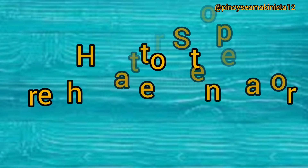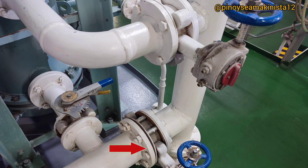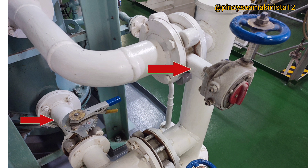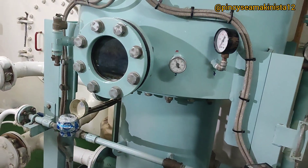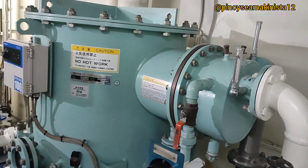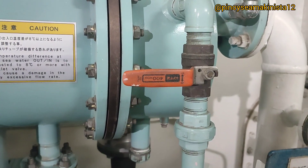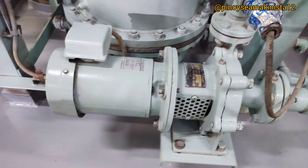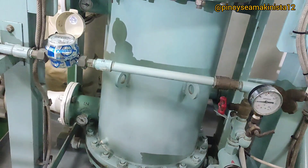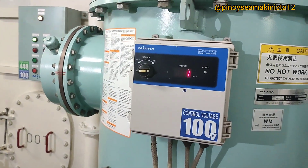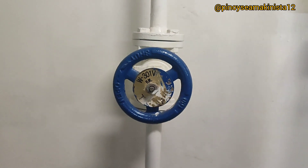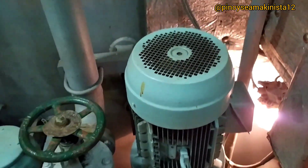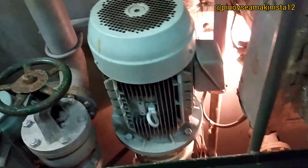How to stop the fresh water generator: Fully open the main engine jacket cooling bypass valve and fully close the inlet and outlet valves of the main engine jacket cooling. Confirm that boiling has stopped from the sight glass of the evaporator shell. Close the feed water valve and chemical dosing valve. Stop the distillate pump and close the discharge valve. Switch off the salinity meter box and close the filling valve to the fresh water tank.